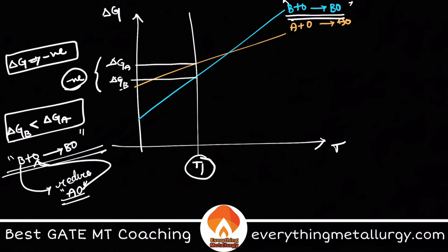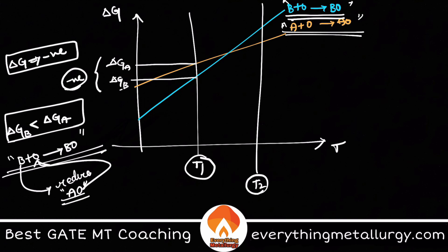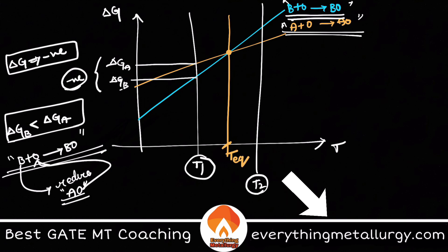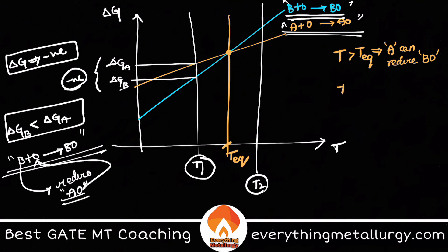Similarly, at another temperature T2, the situation reverses — A + O → AO becomes more feasible. There is a temperature T_equilibrium where both ΔG values are equal. If T > T_equilibrium, then A can reduce BO; whereas if T < T_equilibrium, then B can reduce AO. This is what you have to remember.